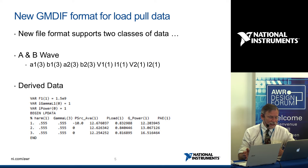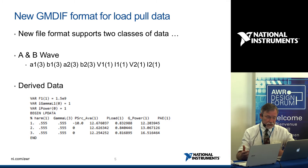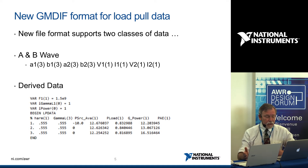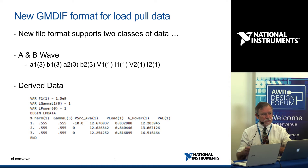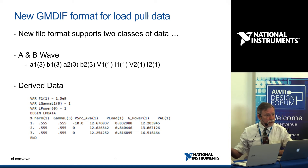We're also negotiating with these companies on yet another load pull format — our generalised MDIF format — which we believe solves some major problems of compacting data and making the files more transportable between measurement systems and simulation systems. Here's a brief overview of the structure. If anybody's interested because they have their own instrumentation and wish to prepare or construct data in the format, please get in touch with me. Essentially, the new GMDIF file format supports an AB wave style of measurements — we're just capturing voltages and currents at specific nodes.